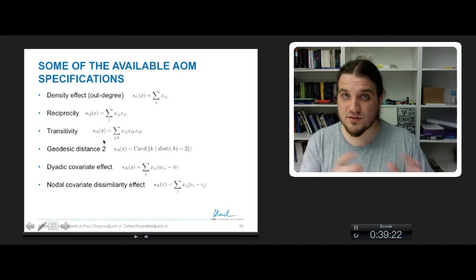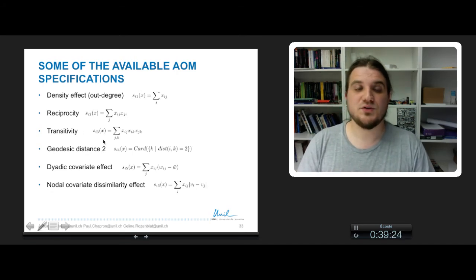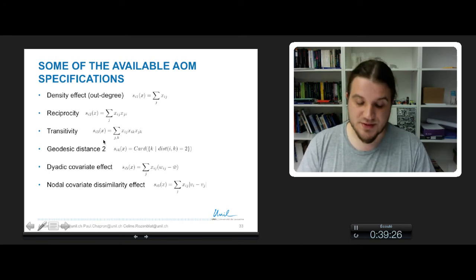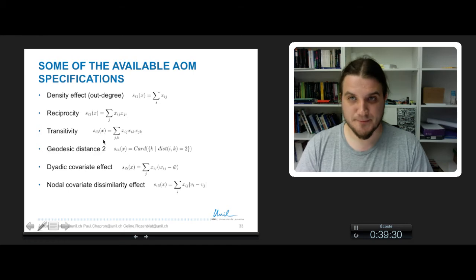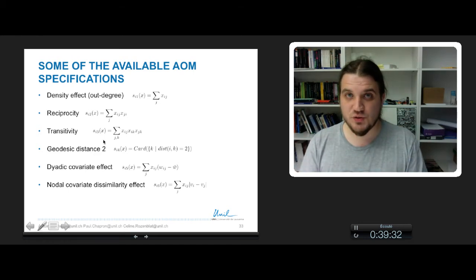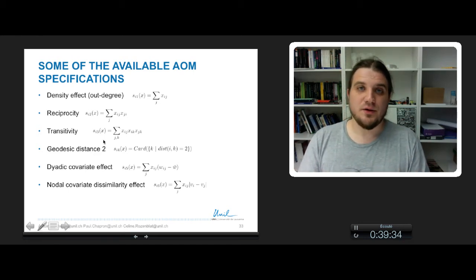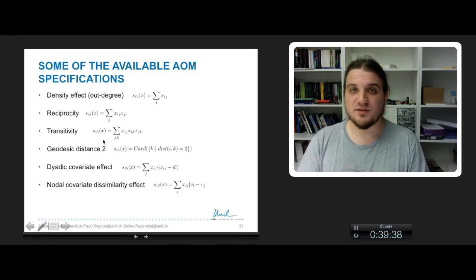There are a lot of other effects to be included in actor-oriented models, but these are some simple examples to understand. So you choose the effect you want to test, you make some hypothesis about the effect,